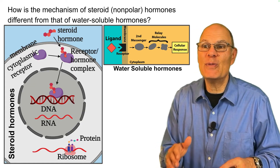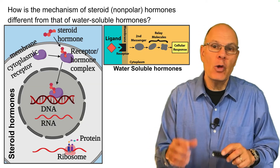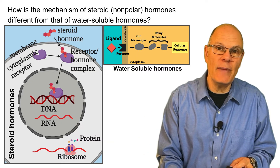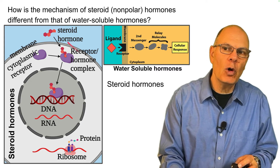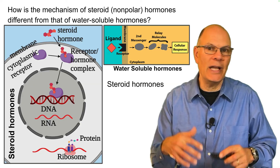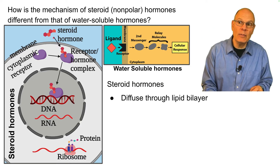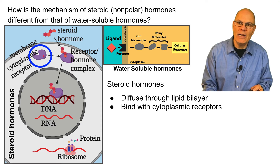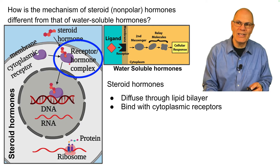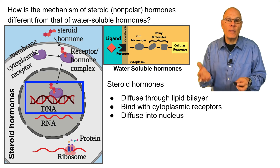How is the mechanism of steroid nonpolar hormones different from that of water-soluble hormones? Steroid hormones like estrogen or testosterone are nonpolar, so they can diffuse through the phospholipid bilayer. Once inside, they bind with a cytoplasmic receptor, forming a receptor-hormone complex that is capable of diffusing into the nucleus, where it acts as a transcription factor.